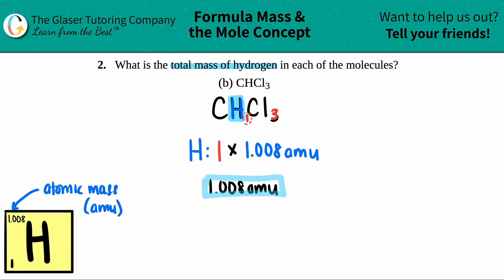So that's the total mass of the hydrogen, 1.008 AMU. And that's it.